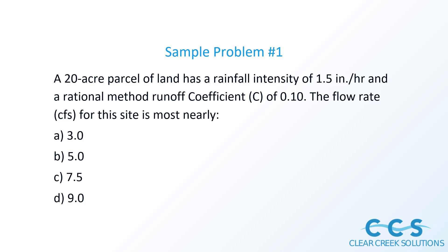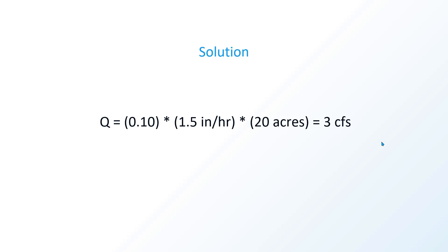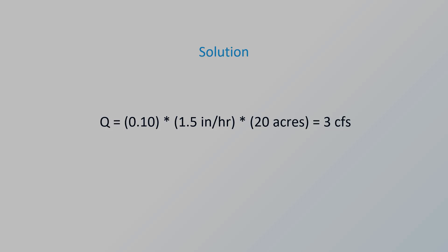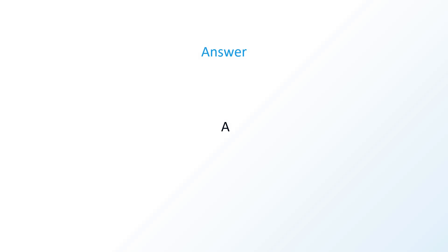The flow rate or discharge from the site is most nearly — so we're going to use Q equals CIA. The peak discharge equals the runoff coefficient times the rainfall intensity times the watershed area. Q equals C (0.1) times I (1.5 inches per hour) times A (20 acres) equals 3 CFS. I want to prove that the units work out: C has no units, I is in inches per hour — if you convert inches per hour to feet per second, and acreage converts to feet squared — you get feet per second times feet squared equals feet cubed per second, which equals the peak discharge. So the units do work out, and the answer would be A.